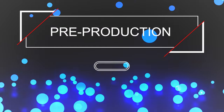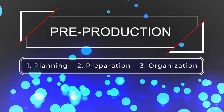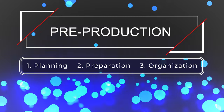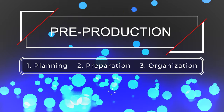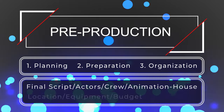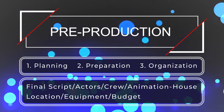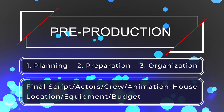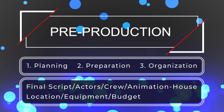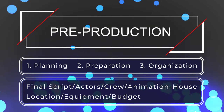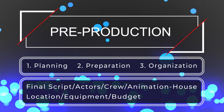Pre-production. Pre-production is the planning, preparation, and organization of the overall project. It involves finalizing the script, hiring the actors, crew, and or animation houses, finding locations, determining what equipment you'll need, and figuring out the budget.